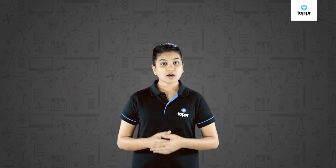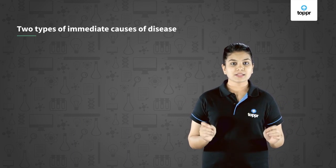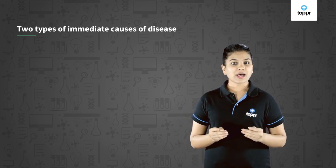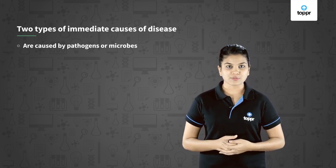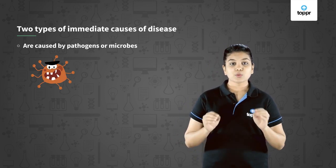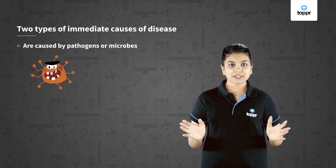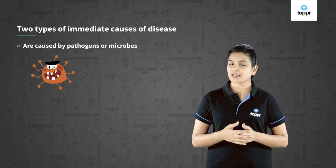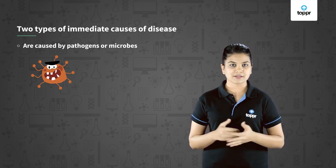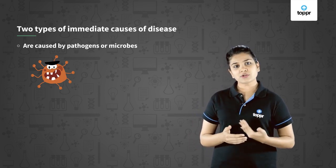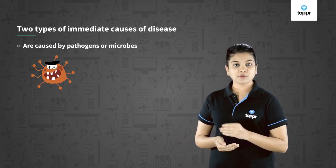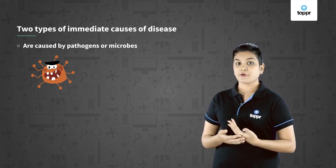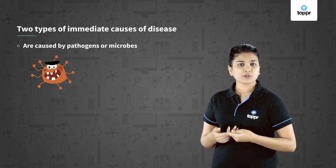Now there can be two immediate causes of a disease. The first are those which we know as pathogens or microbes. These are organisms which spread in the community and spread the disease along with them, and hence these diseases can also be called infectious diseases. So the first cause, occurring with the help of microbes, gives us infectious diseases — for example, like the common cold.